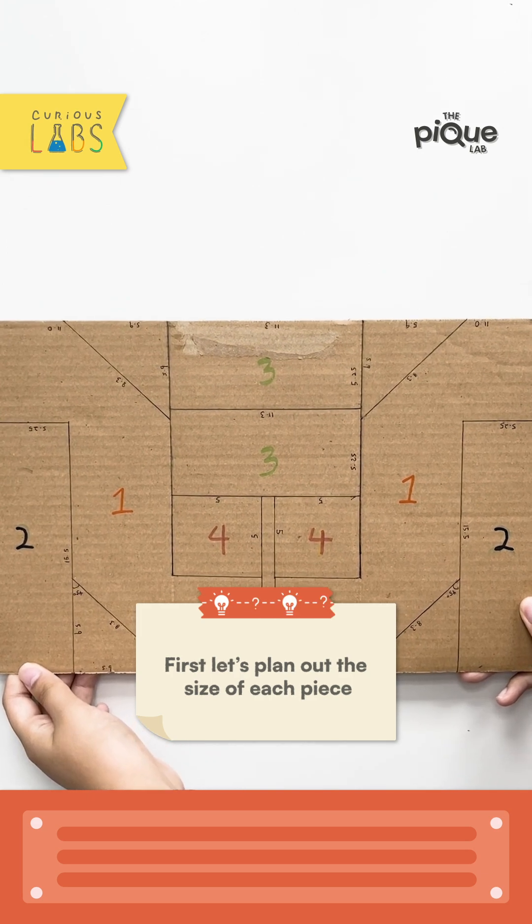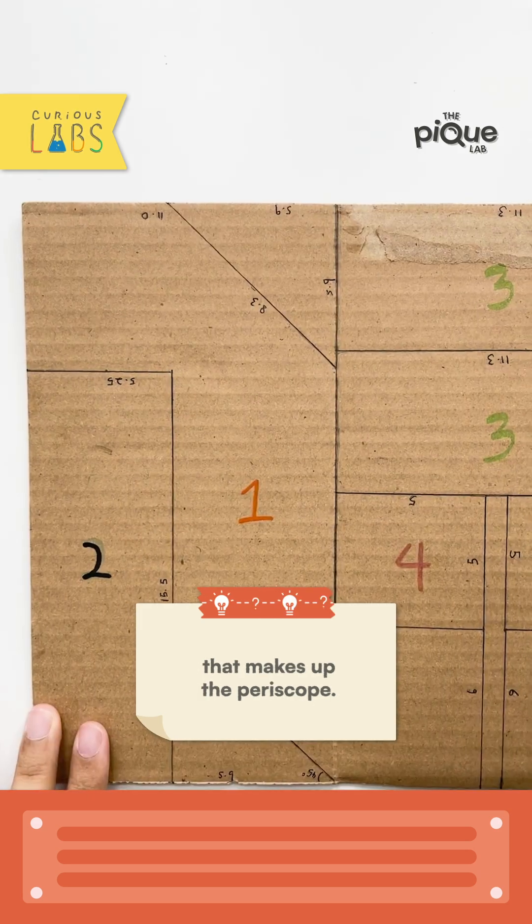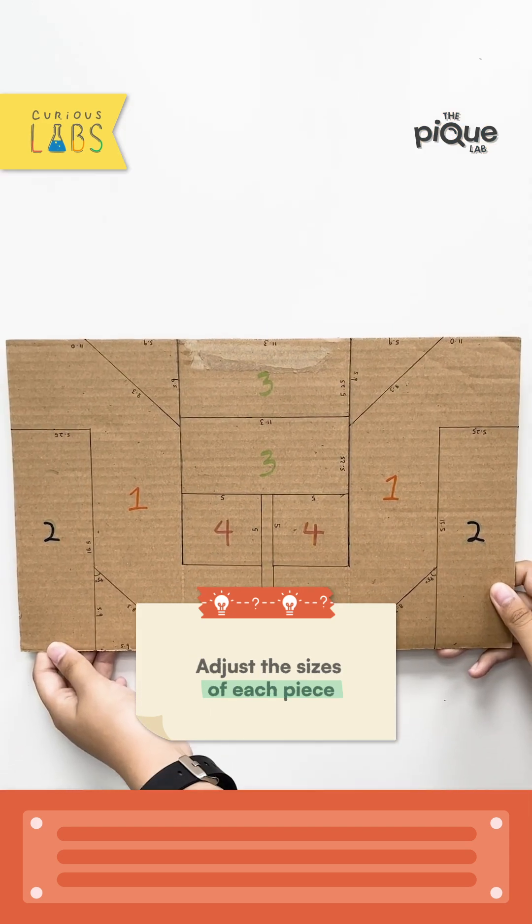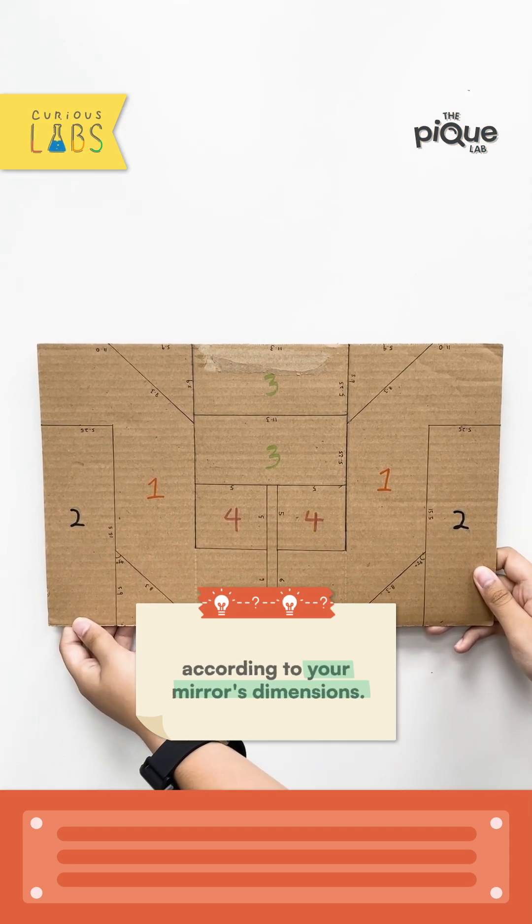First, let's plan out the size of each piece that make up the periscope. There should be eight pieces in total. Adjust the sizes of each piece according to your mirror's dimensions.